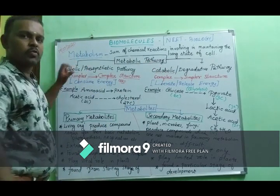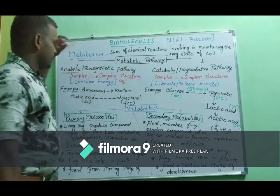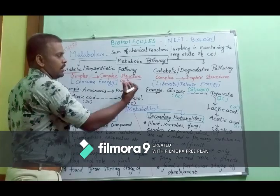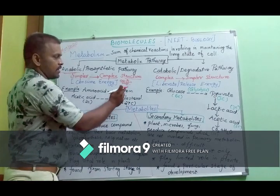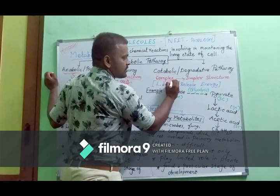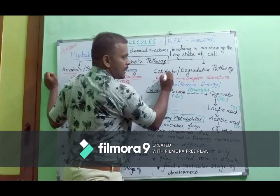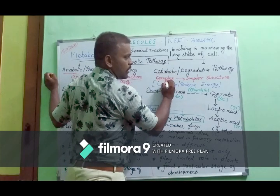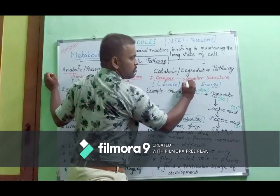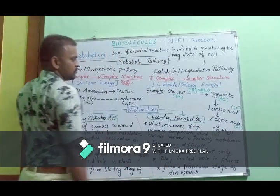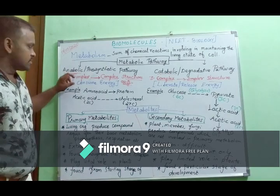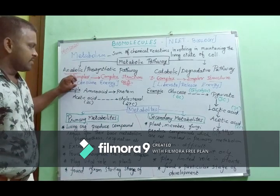If you have small molecules aggregate into a larger molecule and create a complex structure, we call it anabolism. Catabolism, on the other hand, involves complex molecules being broken down in a degradative process. During this reaction, energy is consumed.